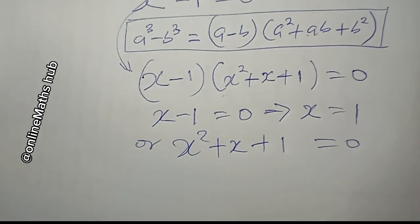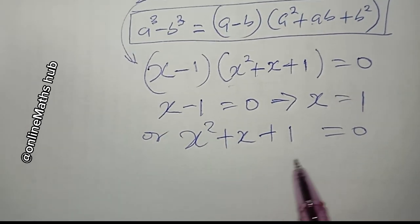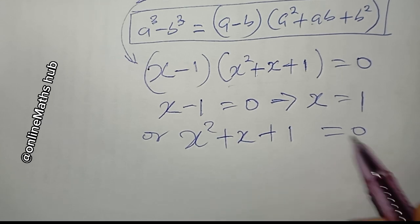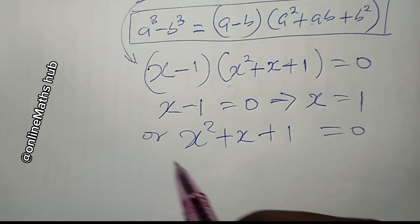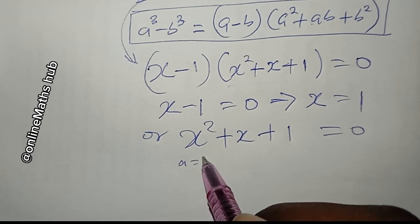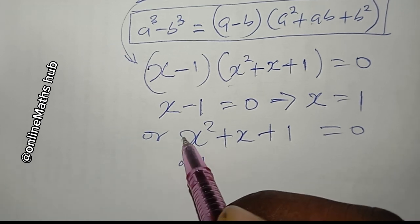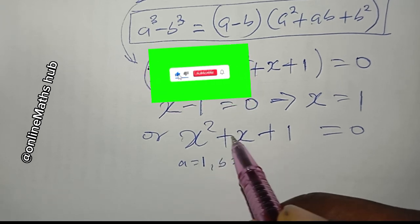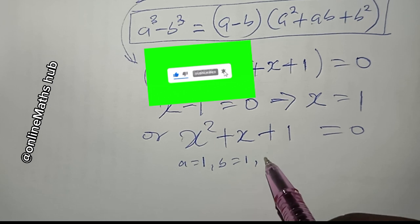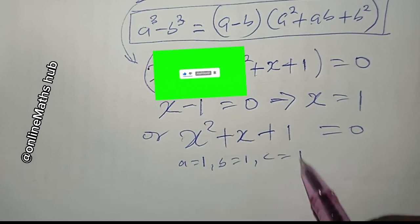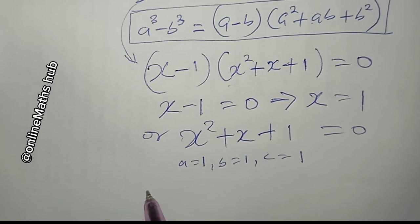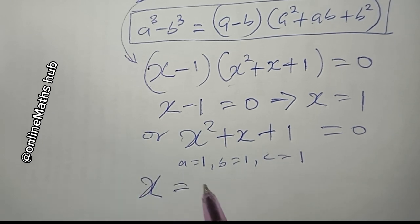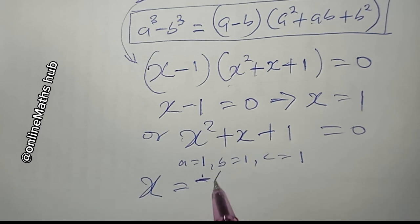I'll use the quadratic formula to solve x squared plus x plus 1 equals zero. Here a equals 1 (coefficient of x squared), b equals 1 (coefficient of x), and c equals 1 (the constant). So x equals minus b plus or minus the square root of b squared minus 4ac, all divided by 2a.